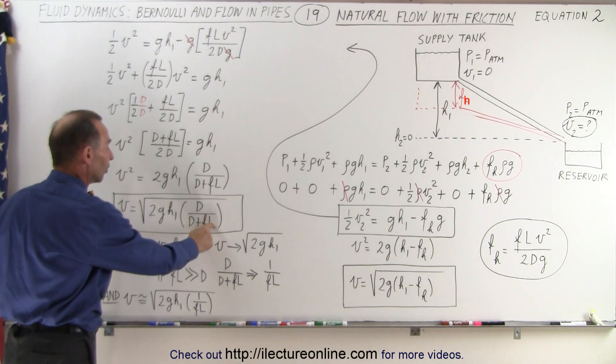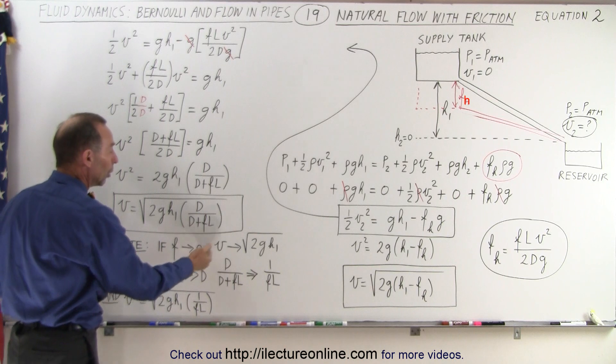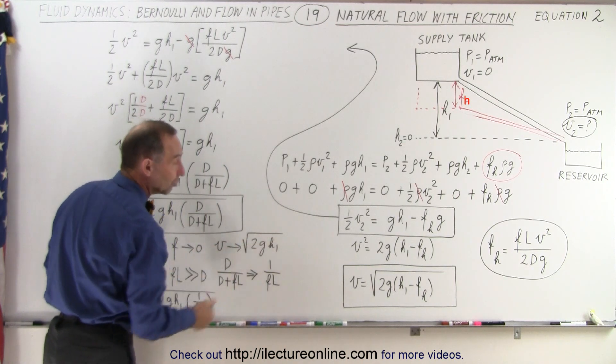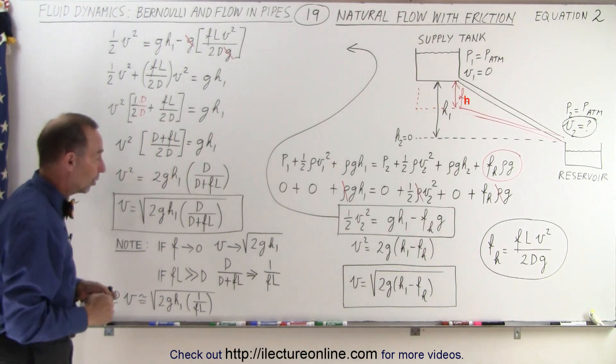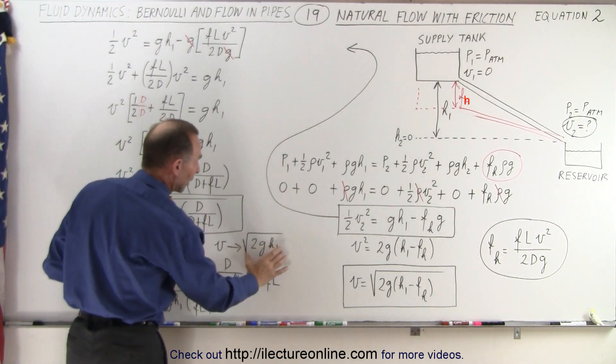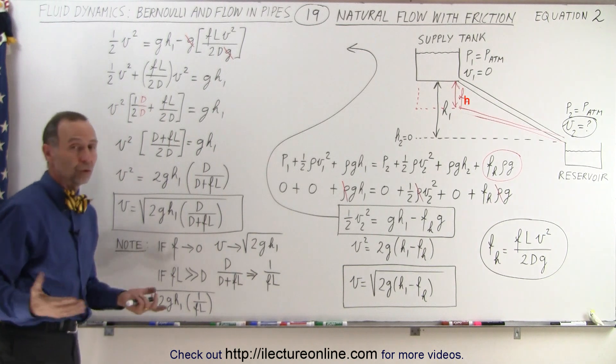Well if this goes to zero, we have d over d which is one, we end up with the velocity being the square root of 2gh, which is what we expect. If there's no friction and there's natural flow with no friction, the velocity at the bottom would simply be the square root of 2gh.